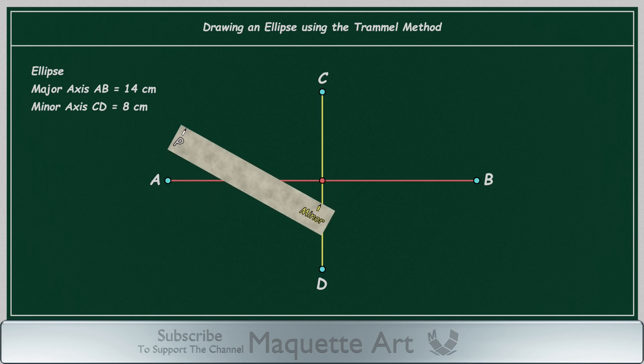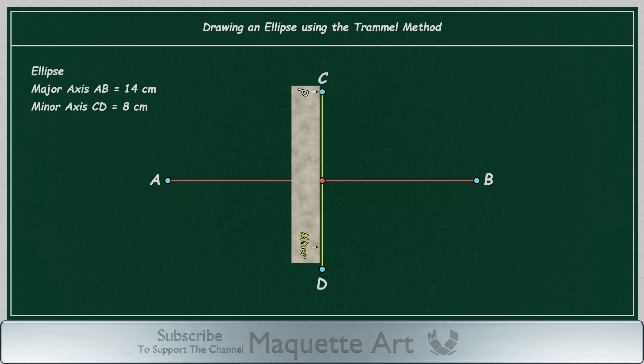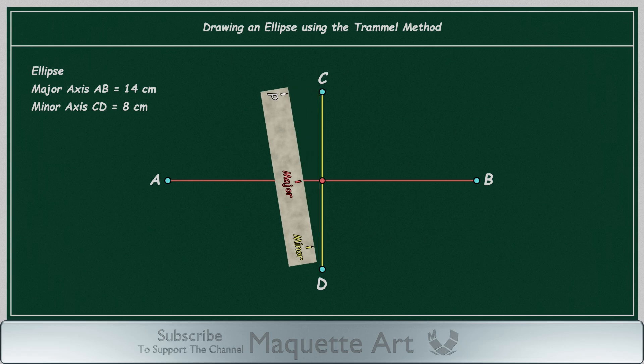Now align the edge of the paper to the minor axis, and make sure that point P is at the top of the minor axis. Then add a mark at the major axis position. Name this mark major. Now the trammel is finished.